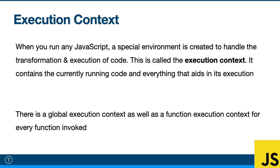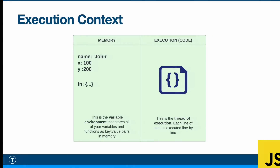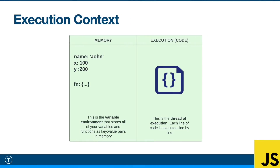Whenever we run our JavaScript code, whether in the browser or in Node.js, it creates a special environment that handles the transformation and execution of that code — this is called the execution context. It contains the currently running code and everything that aids in its execution. There are a couple of types: the global execution context, created right away when we run our script, and a function execution context, created anytime a function is invoked. Think of it as a box with a memory side — the variable environment — where variables and functions are stored, and an execution side where code runs line by line.